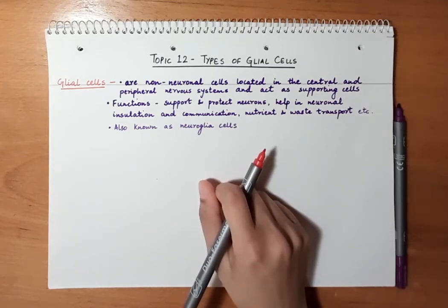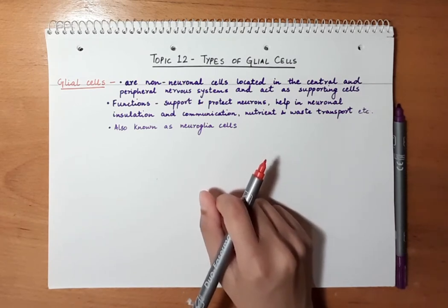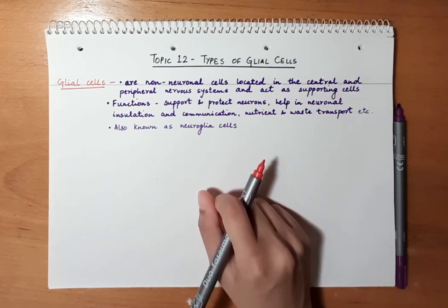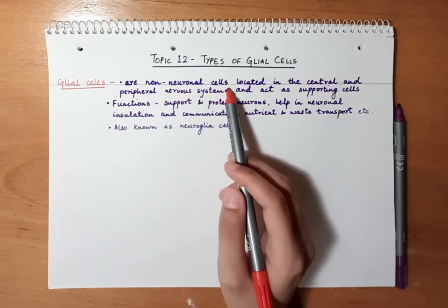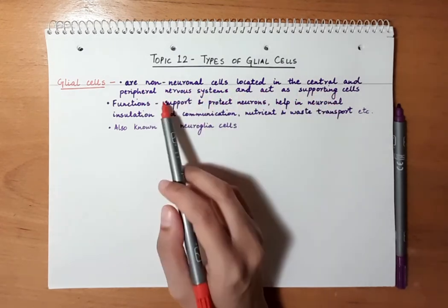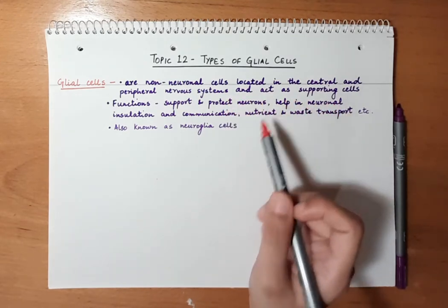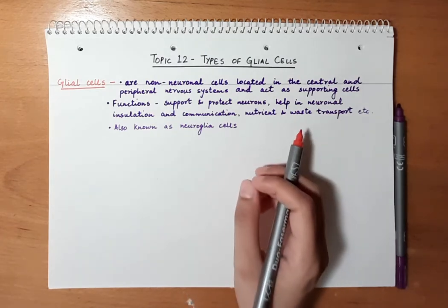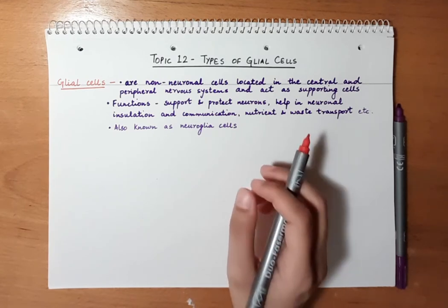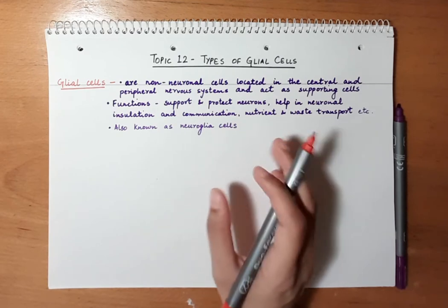Hello everyone, welcome back to Easy Neuro channel. Today we will be learning about the different types of glial cells in the brain. Glial cells are non-neuronal cells located in the central and peripheral nervous systems and act as supporting cells. These cells are present in the whole nervous system and basically act as supporting cells in the brain, spinal cord, and the rest of the peripheral nervous system.